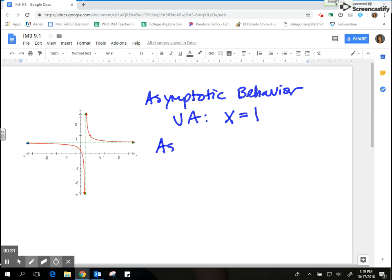We start with as x approaches, but this time we're approaching the asymptote, the vertical asymptote, which is at x equals 1. Now if we look at the vertical asymptote right here at x equals 1, you can see there are two sides: a right side and a left side. So we need to specify which side of the asymptote we're looking at.